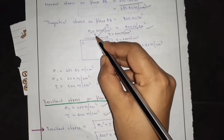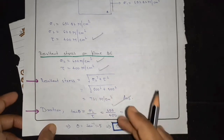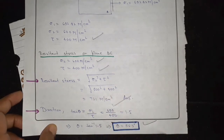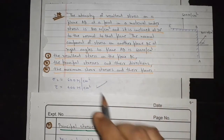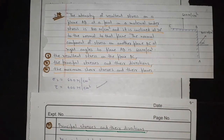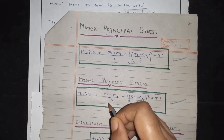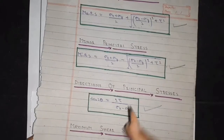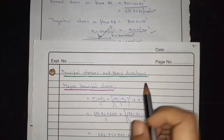Our theta value is 56.3 degrees. If you have any problem with the starting numbers, it will become clear. This part is related to the starting numbers. First part is complete — we have found the resultant stress and the angle. Now, second part: principal stresses and their directions, both major and minor.